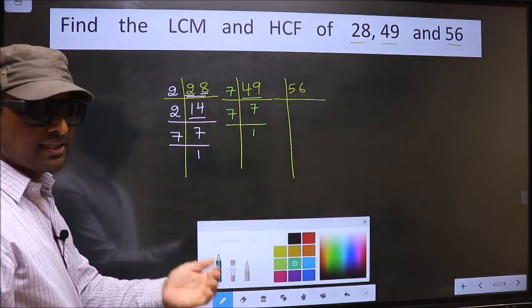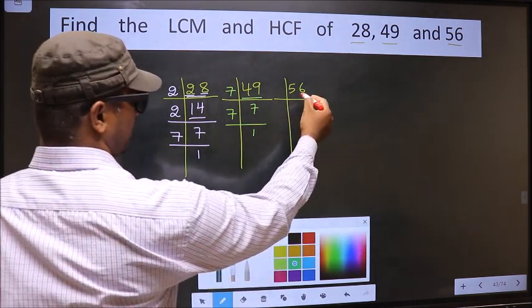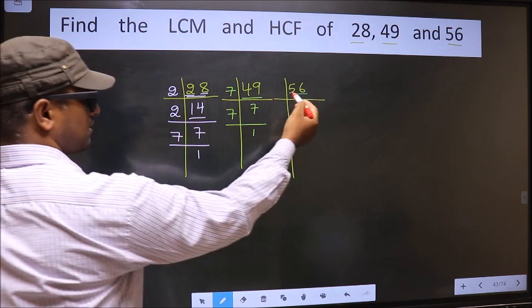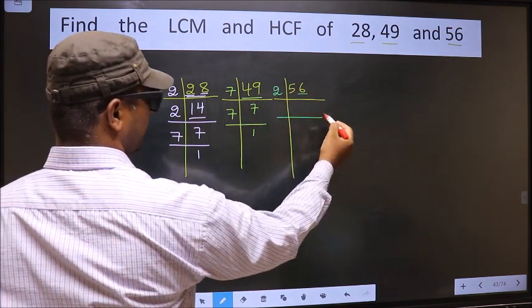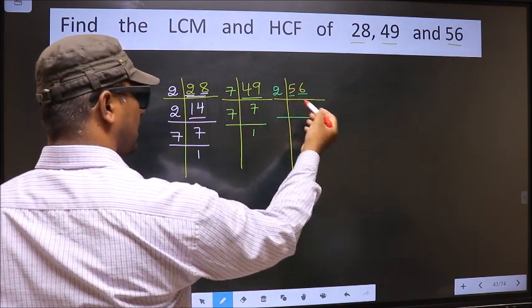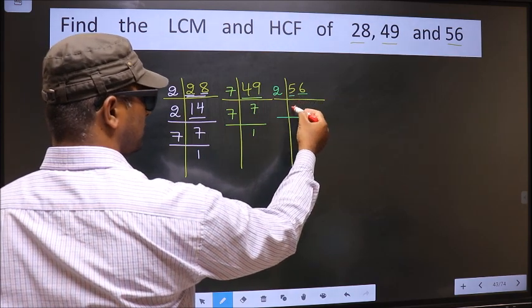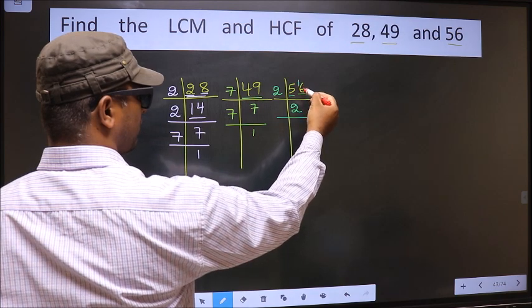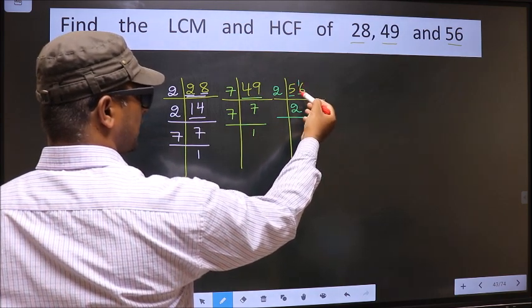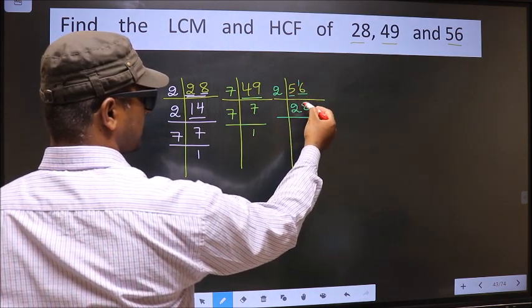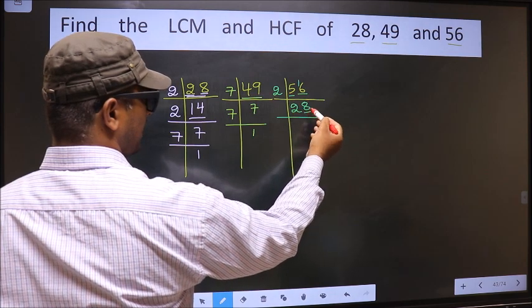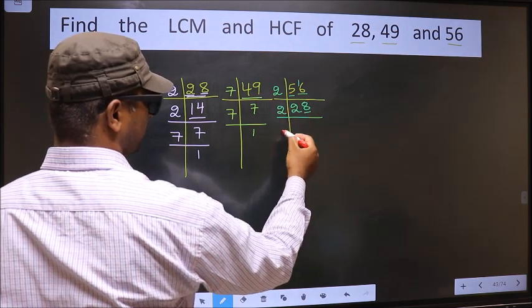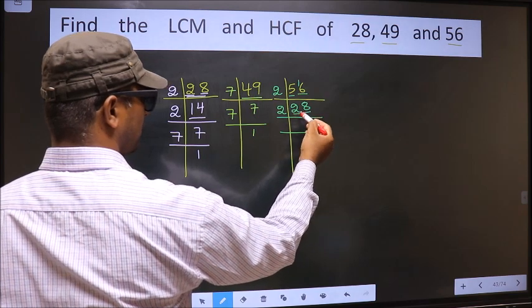Now the other number. Last digit 6 is even, so we take 2 here. The first number 5, our number close to 5 in 2 table is 2 times 2 is 4. 5 minus 4 is 1, 1 carried forward 16. When do we get 16 in 2 table? 2 times 8 is 16. Now here last digit 8 is even, so we take 2.